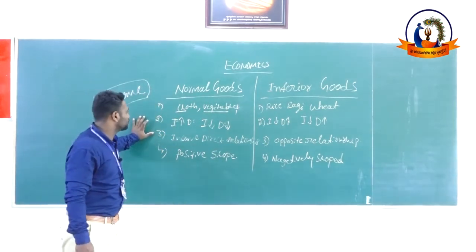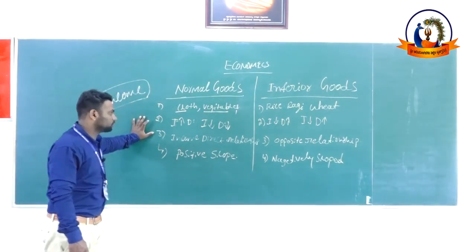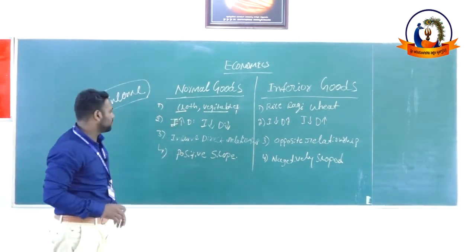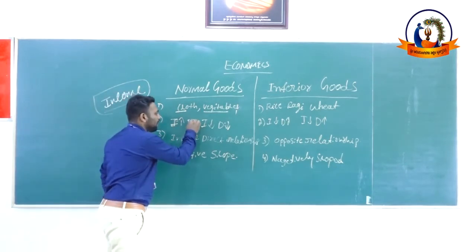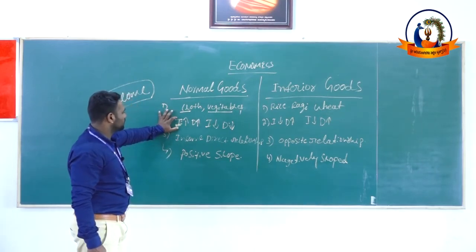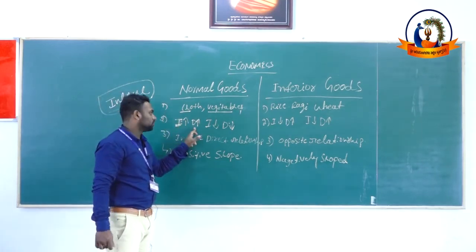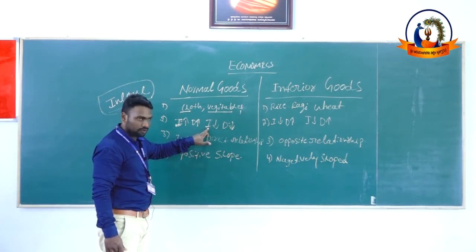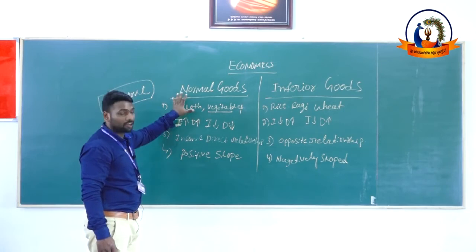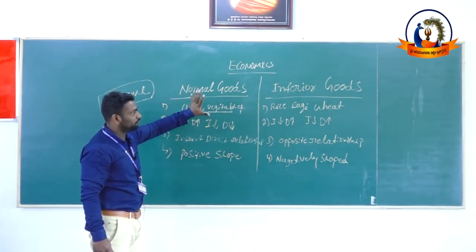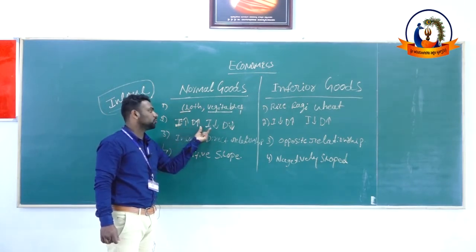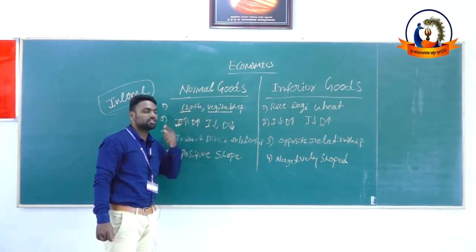The second difference between normal goods and inferior goods: for normal goods, when consumer income increases, demand increases. When consumer income falls, demand falls. This is the second characteristic of normal goods.